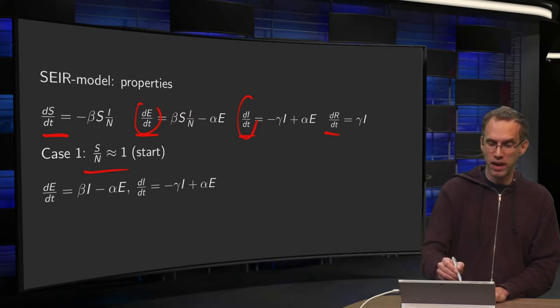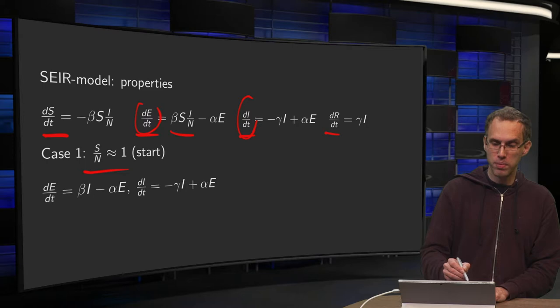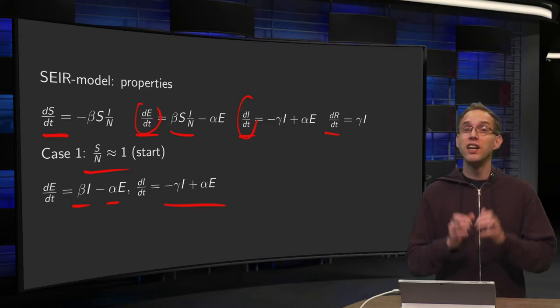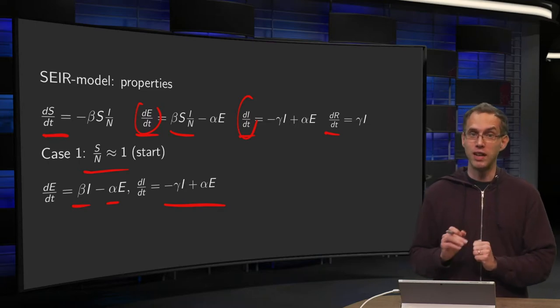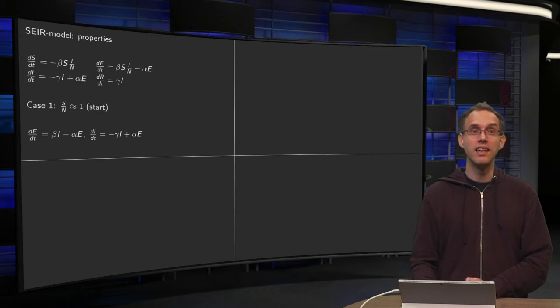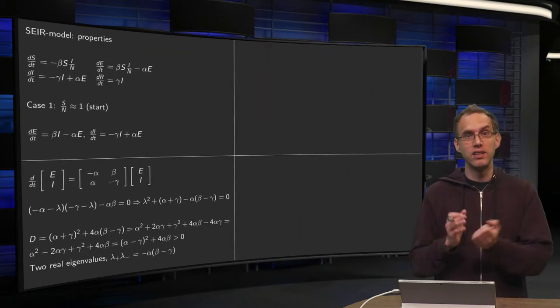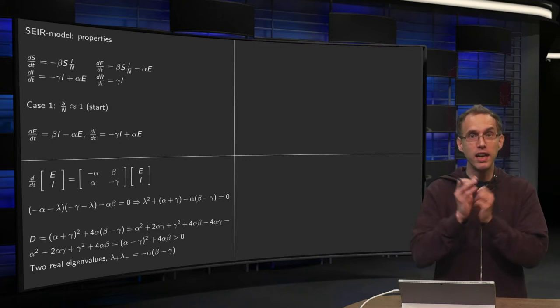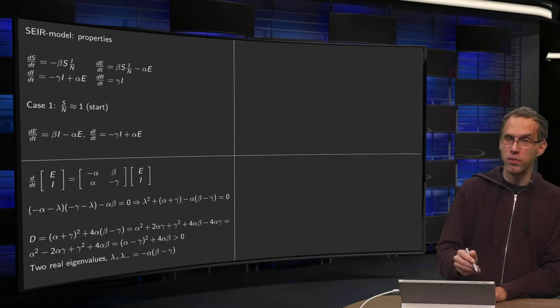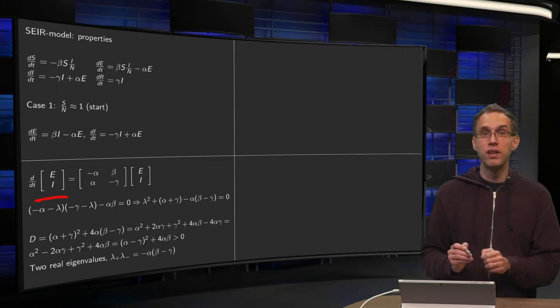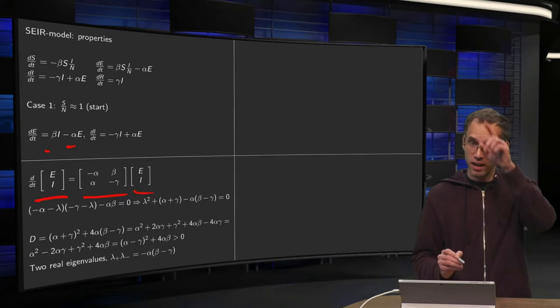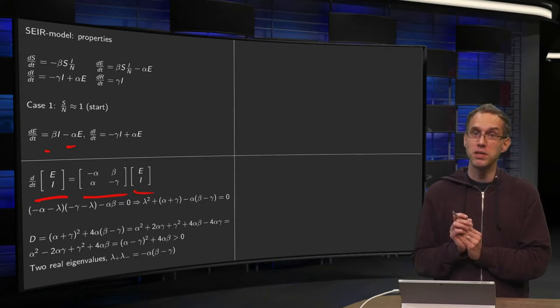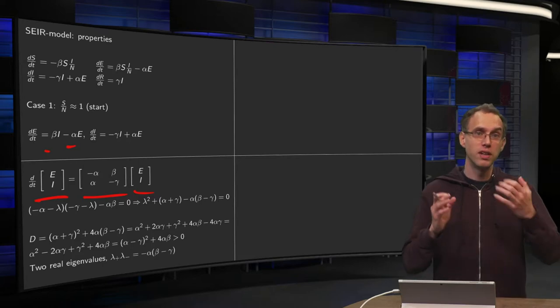What do we get if we set S over N to 1? Here we get beta times I minus alpha times E and here we just get the same. Then we have a system of two differential equations but a linear system so we can solve the linear system analytically explicitly using some linear algebra. We can rewrite in the form x prime equals A times x. We have the DDT of E and I matrix A which contains this parameters beta and alpha times E times I. So it's of the form x prime equals A times x. How do you solve it? How do you see whether solutions are stable or not? You look at eigenvalues.